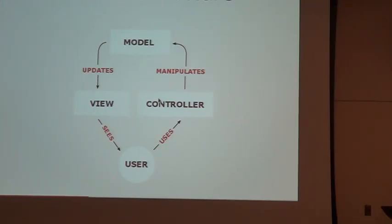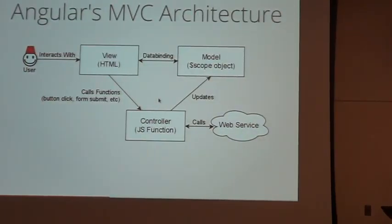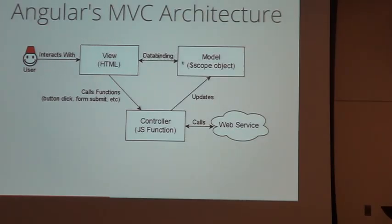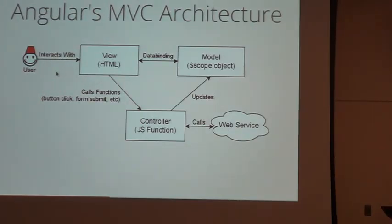Bringing it closer to Angular: the user interacts with the view, which is just HTML. That view is associated with the model via data binding — whenever the model updates, the view updates. We have a controller that can update the model, either by initially fetching data from a web service, or by responding to user actions like form submissions or button clicks, which call functions on the controller that then update the model.